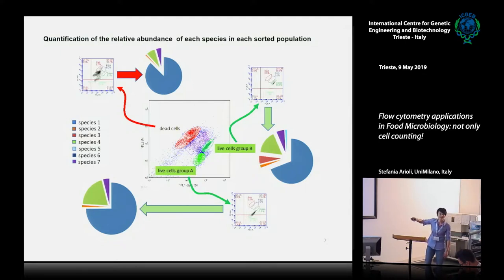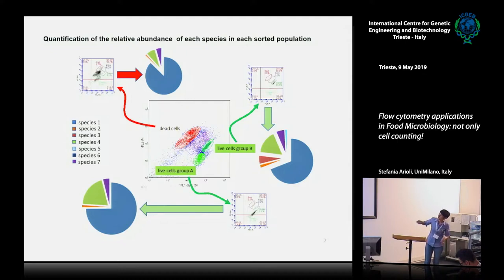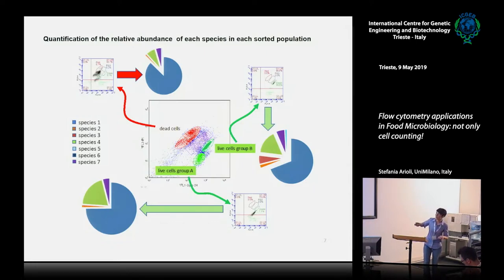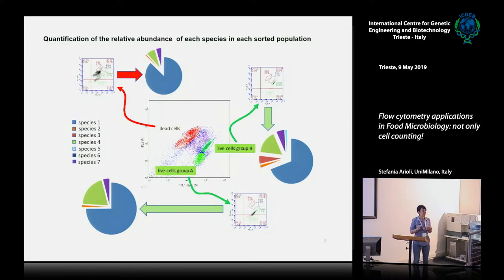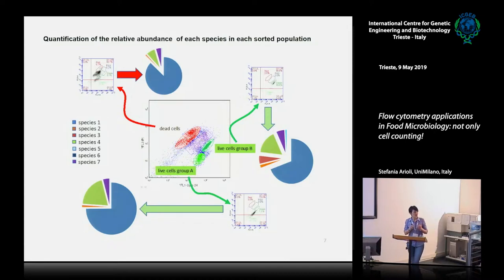The results are quite clear. Here I list the seven species in this probiotic formulation — I won't give you the names because this is just an example. Species one is present in all three populations, as expected, because in my probiotic formulation there are both alive and dead cells for species one. The first take-home message is that with flow cytometry we can count cells in suspension and assess their viability, and although it is not a taxonomic approach, we can overcome this issue by combining other techniques.